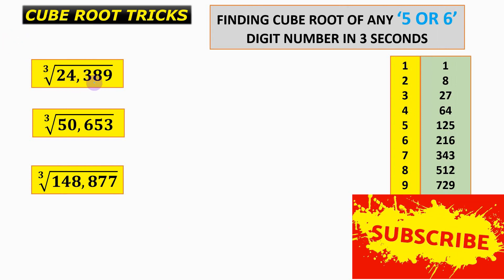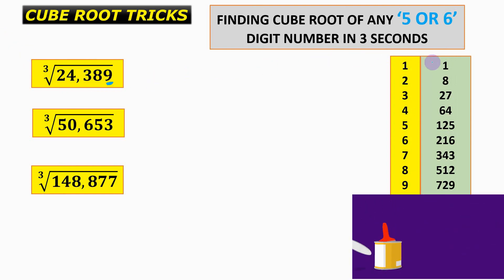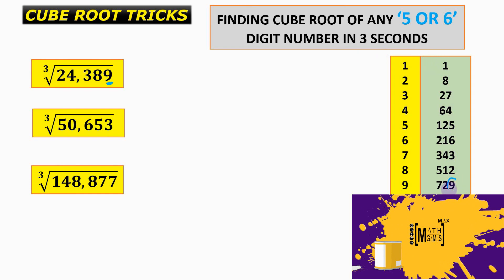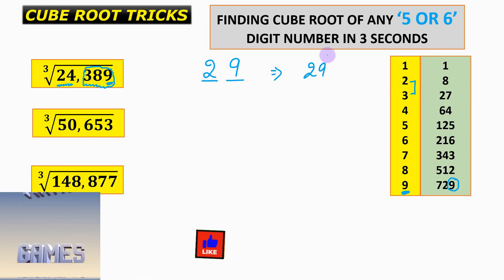The first question is the cube root of 24,389. The unit place is 9. The unit place of 9 occurs when the unit place of the original number is 9, so we write 9 as the units digit. We then discard the last three digits and are left with 24. Since 24 lies between 2³=8 and 3³=27, the tens digit is 2, giving the answer 29.